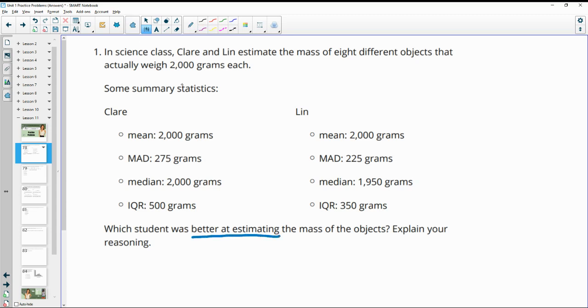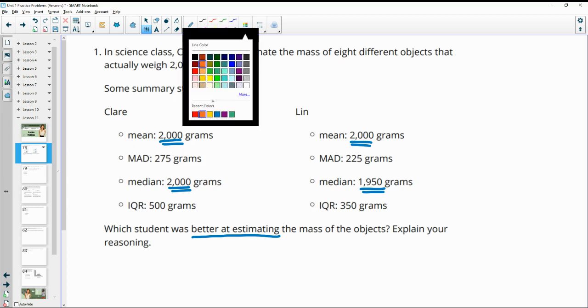So better at estimating them. When we look at this, the mean of each of their data is 2,000, which is the exact amount each of the items were. The median for Claire was 2,000, and the median for Lynn was 1,950. So hers was a little bit below, but all of their central data was very close to the actual weight.